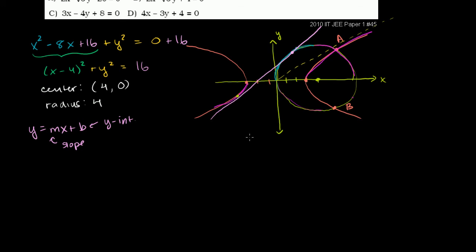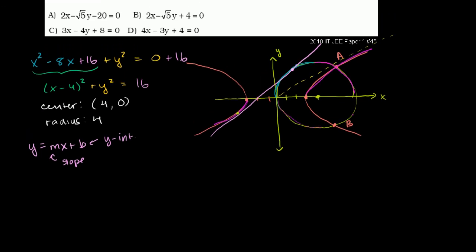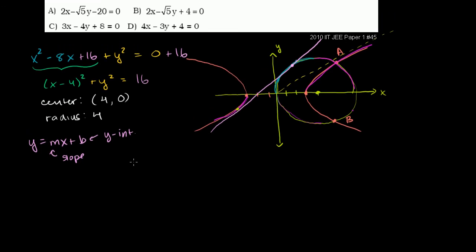You might be tempted to break out some calculus and figure out the slope at any point alongside a circle, but there's an easier way to do it. You just have to realize that if a line is tangent to a circle, it will only intersect that circle at one point. What I want to do is figure out where this equation and the equation of the circle intersect. That's what we'll focus on in this video, and then we'll do the same thing for the hyperbola.